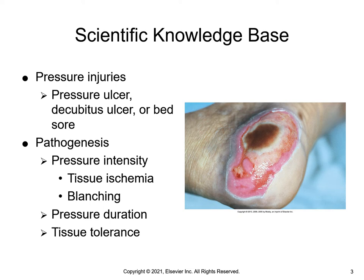The second factor related to tissue intolerance is the ability of the underlying skin structures — blood vessels and collagen — to help redistribute pressure. Systemic factors like poor nutrition, hydration status, low blood pressure, and aging affect the tolerance of tissue to externally applied pressure.